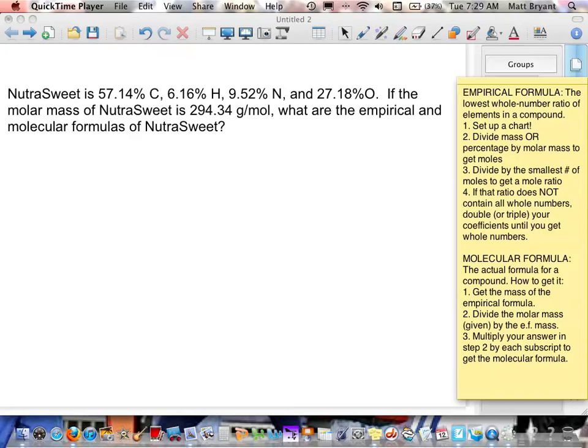The main difference between this and the last problem is that we are given a molar mass, 294.34 grams per mole. In the process, we are going to need that molar mass, but we're not going to need it just yet. If we have the percent composition of this compound, then we have everything we need. So, let's set up a chart.